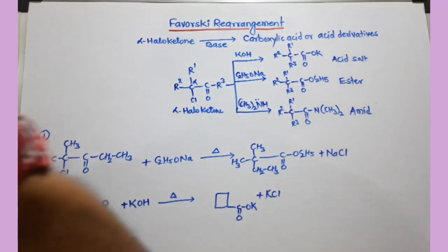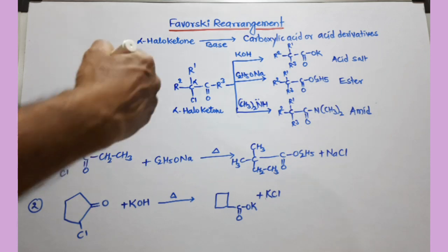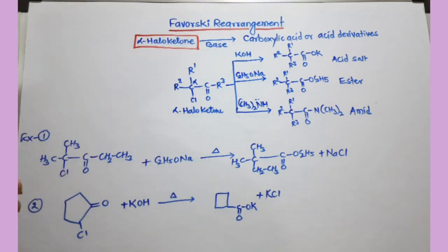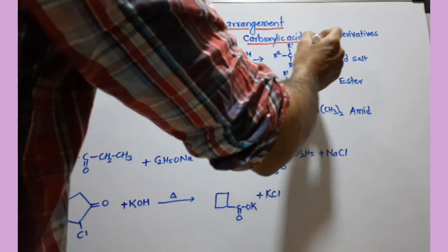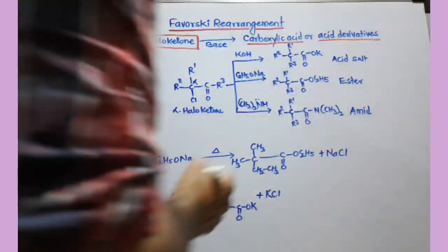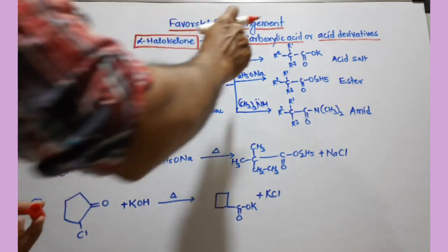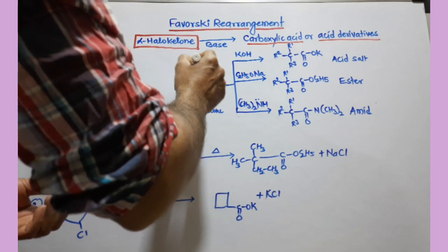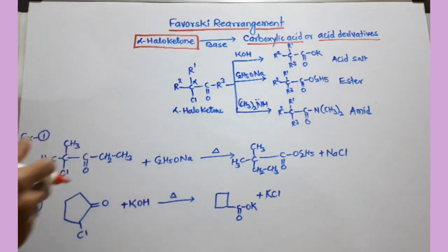We are going to discuss the Favorskii rearrangement. It is a very interesting reaction. The starting compound is an alpha-haloketone. When this alpha-haloketone is treated with a base catalyst, it gives carboxylic acid or acid derivatives like amides. So alpha-haloketones are converted into carboxylic acid or its derivatives in the presence of a base catalyst — this is called the Favorskii rearrangement.